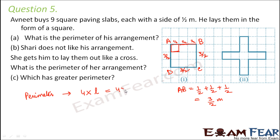So therefore perimeter would be 4 into 3 by 2 that is equal to 12 by 2 which is equal to 6. 2 times 6 is 12. So 6 meters would be the perimeter of his arrangement.